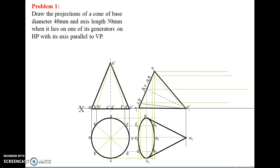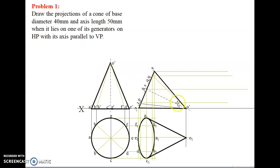With A as center, measure up to B dash (H dash), keep the same distance, and draw an arc. With A as center, measure up to C dash (G dash) and draw an arc. With A as center, measure up to D dash (F dash) and draw an arc. With A as center, measure up to E and draw an arc. Now we have all the points. Join all the points to the apex, just as was done in the previous step.